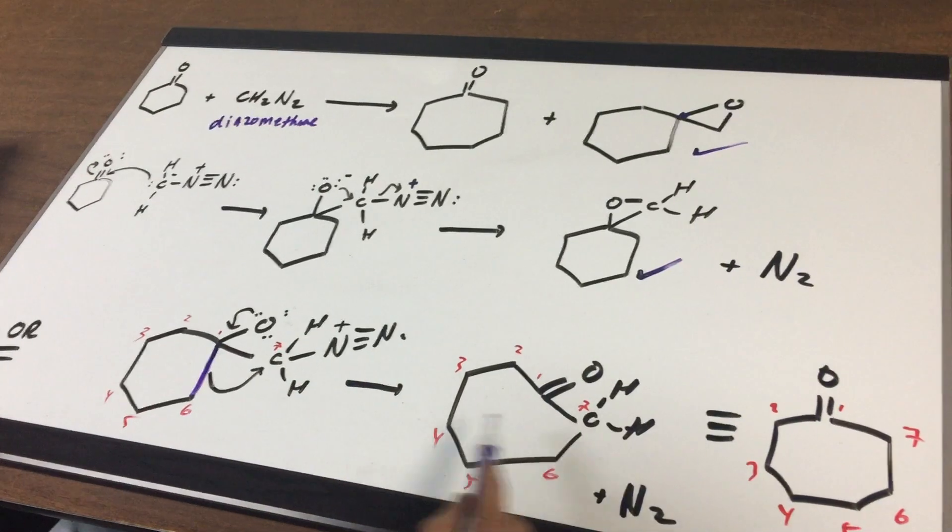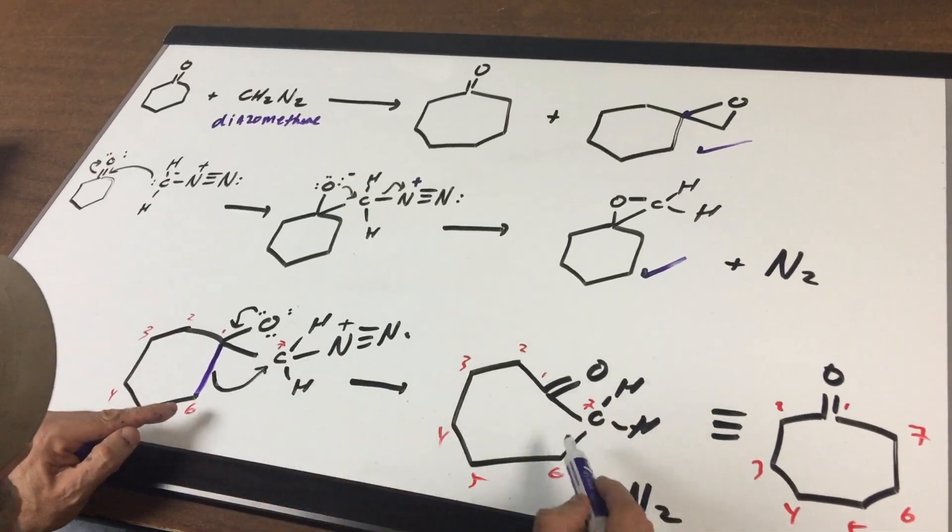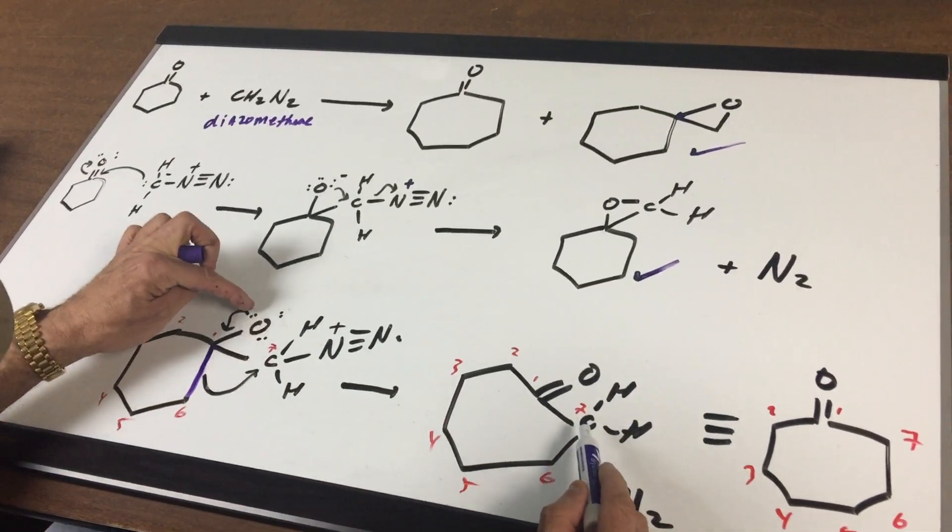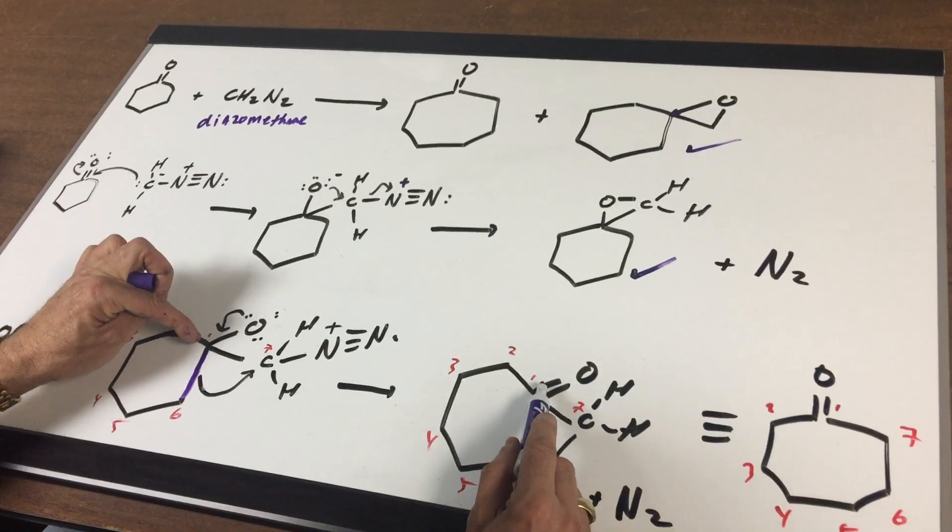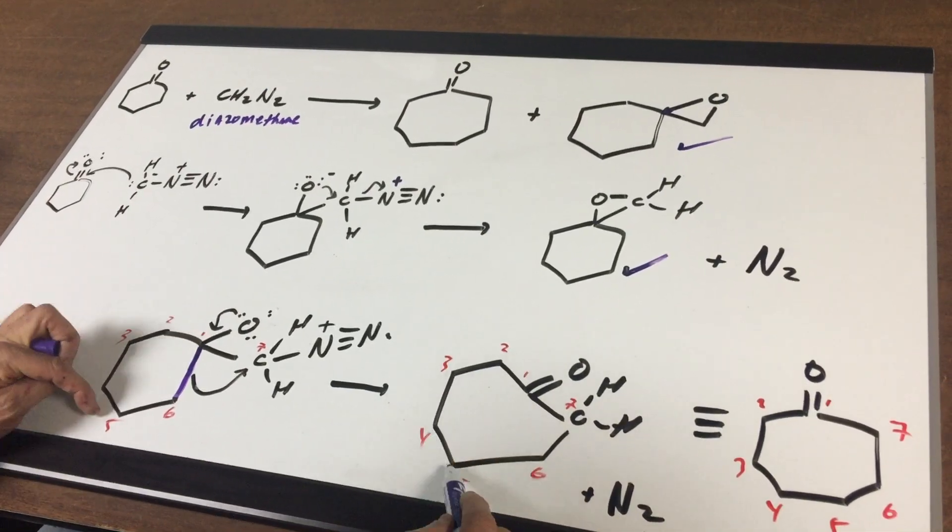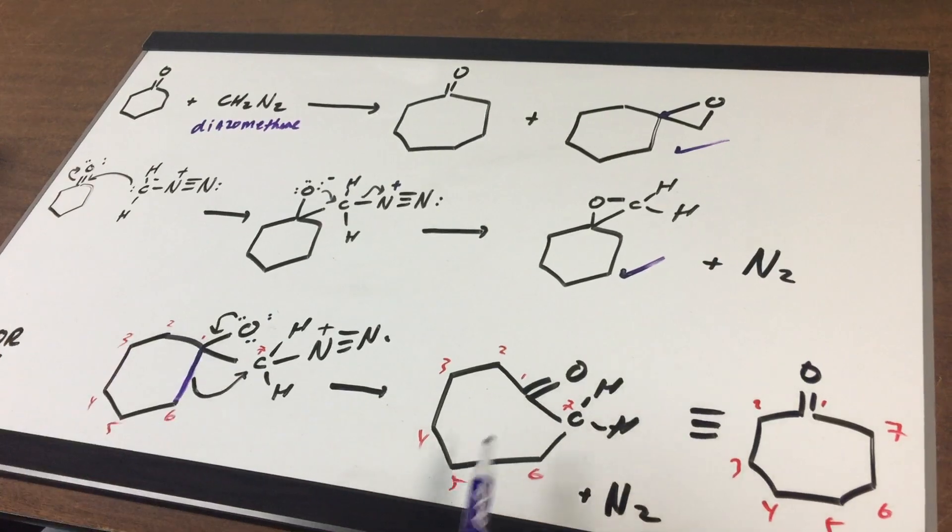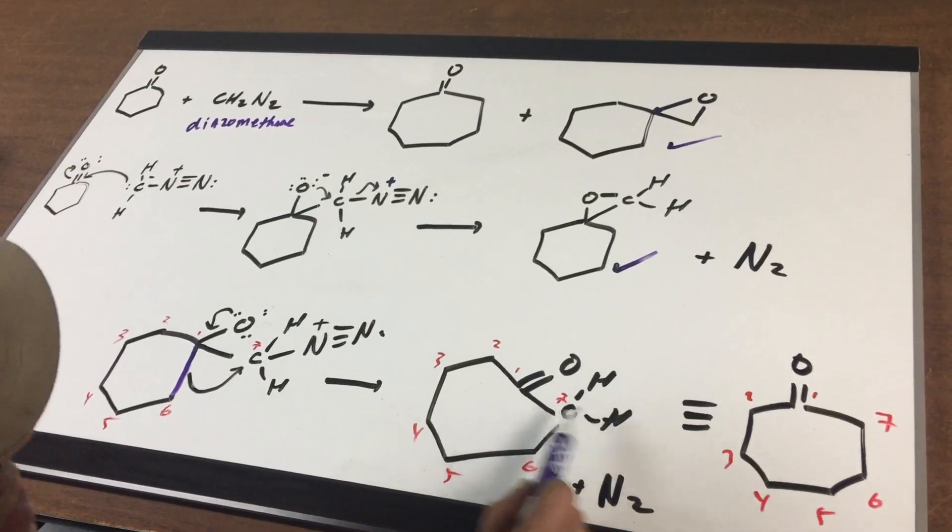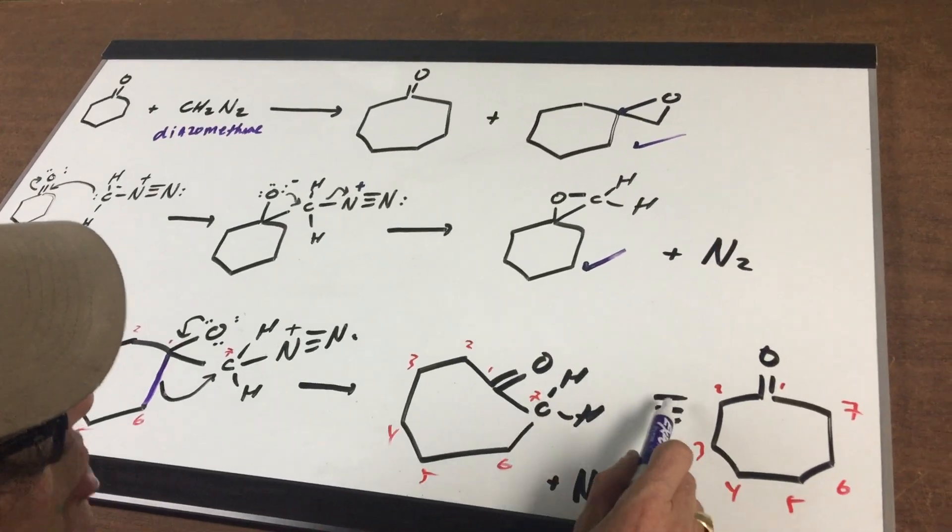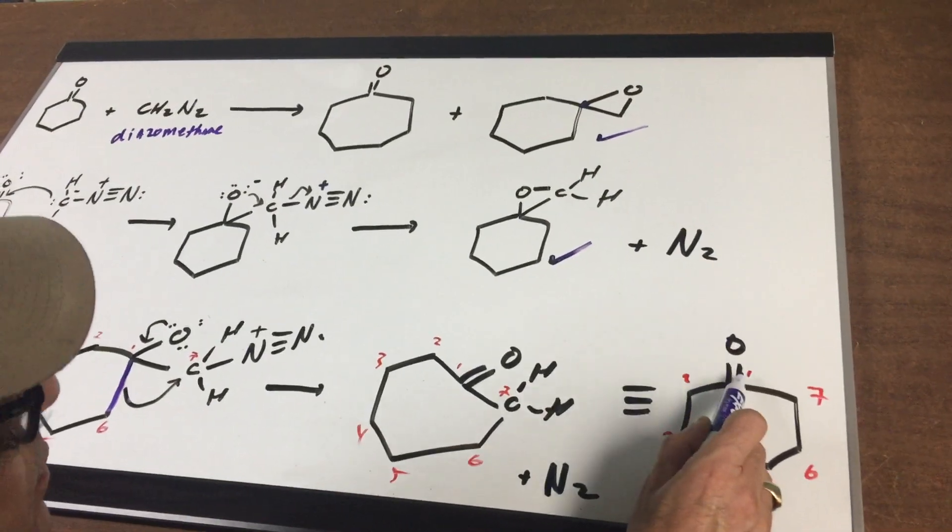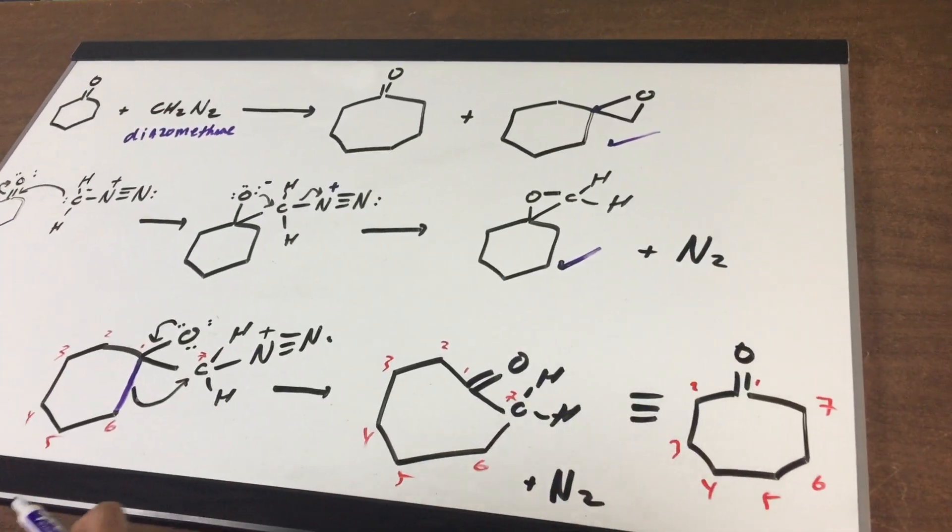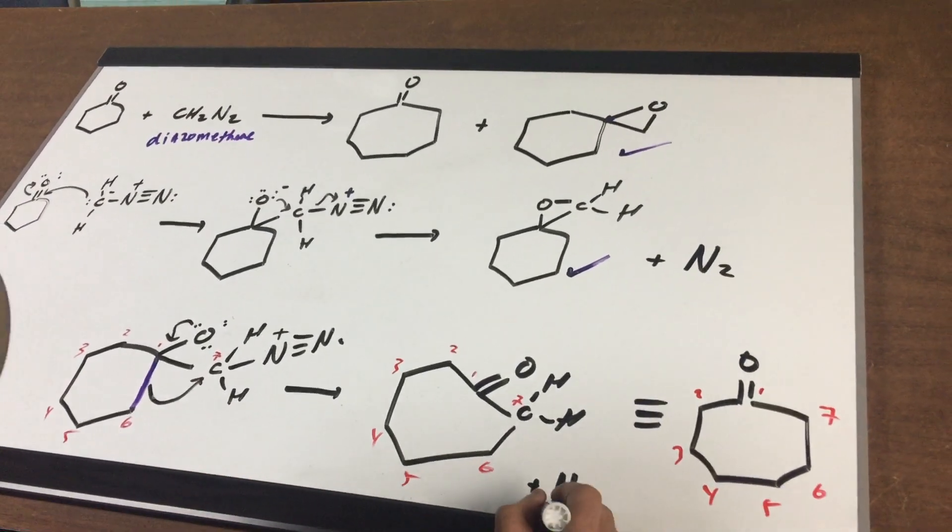So let me get that back. So six is now attached to seven. The double bond folds down. So there's the one, there's my two, three, four, five, and then six to seven. And then you just convince yourself that this, if I just wrote it a little nicer, would be the same as my cycloheptanone. And of course, the nitrogen left.